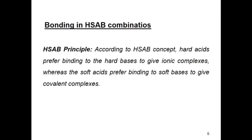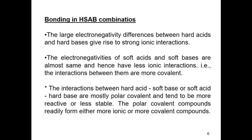According to the HSAB principle, hard acids prefer binding to hard bases to give ionic complexes, whereas soft acids prefer binding to soft bases to give covalent complexes. The electronegativity difference between hard acid and hard base is higher, which leads to strong ionic interactions. The electronegativity of soft base and soft acid are almost the same, so interactions are more covalent. For hard acid–soft base or soft acid–hard base combinations, the interactions are mostly polar covalent, making such compounds more reactive and therefore less stable.